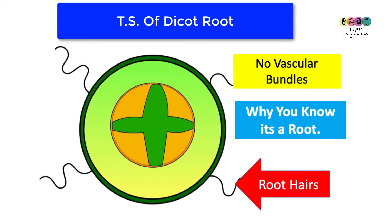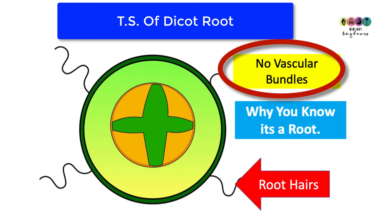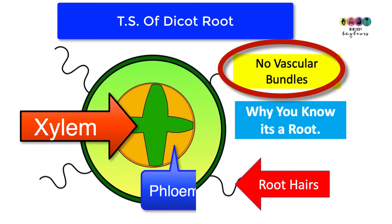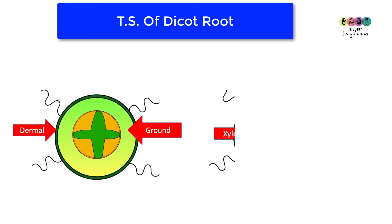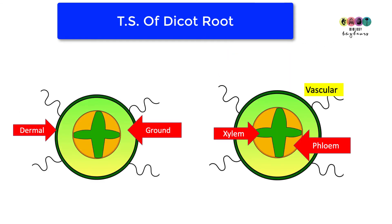Let's compare the dicot stem to the dicot root. How do you know this is a root and not a stem? It's the arrangement of the vascular tissue. In the stem it's arranged as vascular bundles, but in the root there are no vascular bundles. The xylem is like a star-like structure at the centre, and the phloem is in between. If you're asked to draw the dicot root, always mark in the dermal, the ground, and the vascular tissue.